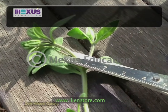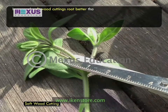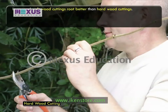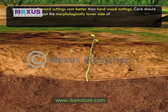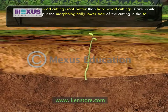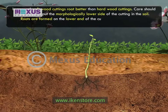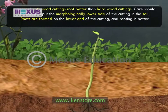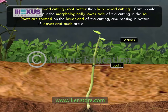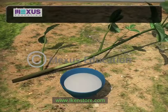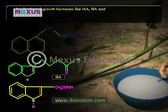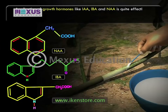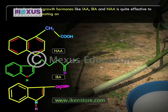In general, softwood cuttings root better than hardwood cuttings. Care should be taken to put the morphologically lower side of the cutting in the soil. Roots are formed at the lower end of the cutting and rooting is better if leaves and buds are also present on the cutting. Application of growth hormones like IAA, IBA and NAA is quite effective to promote rooting on cuttings.